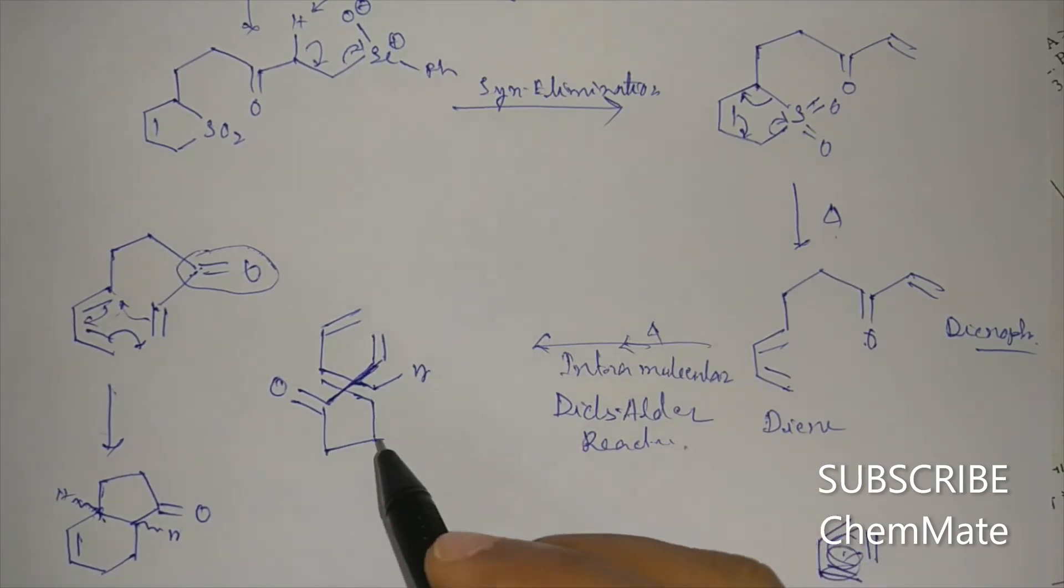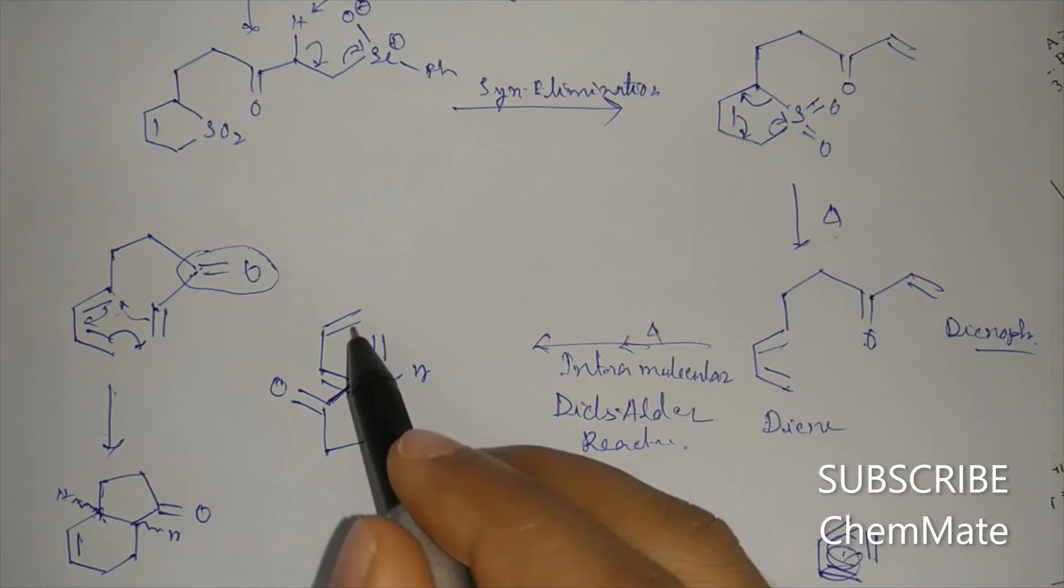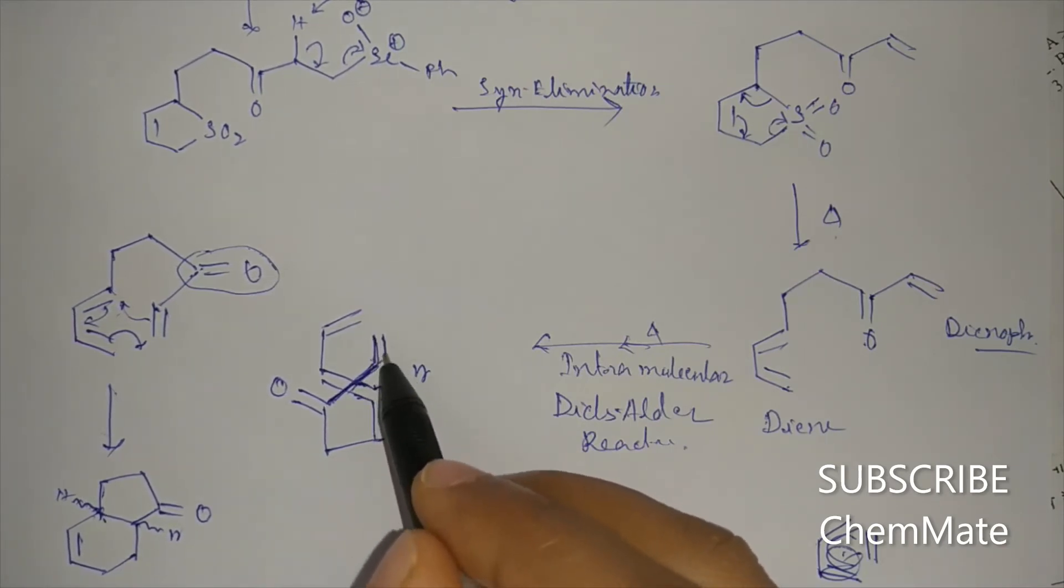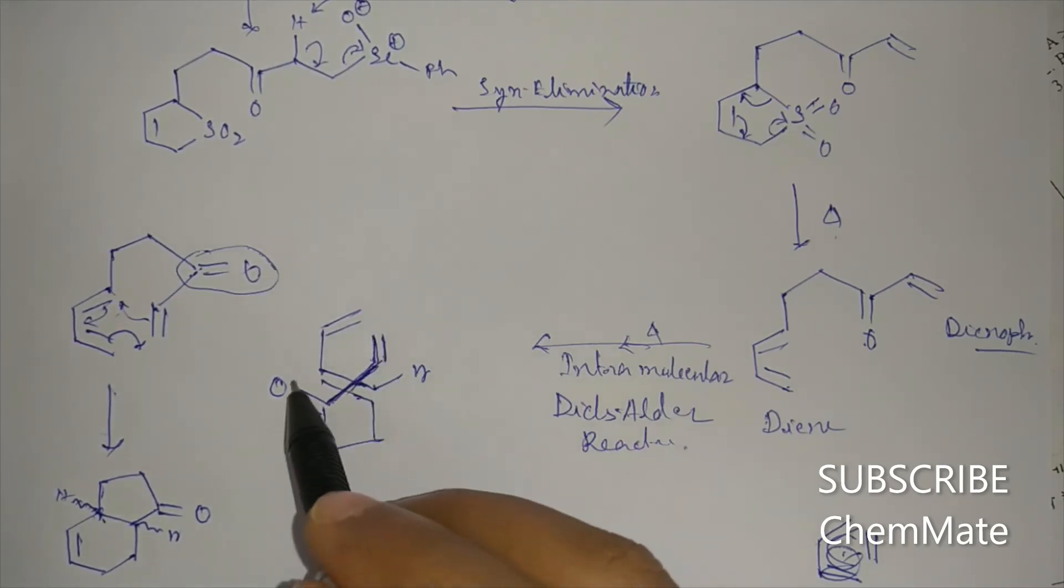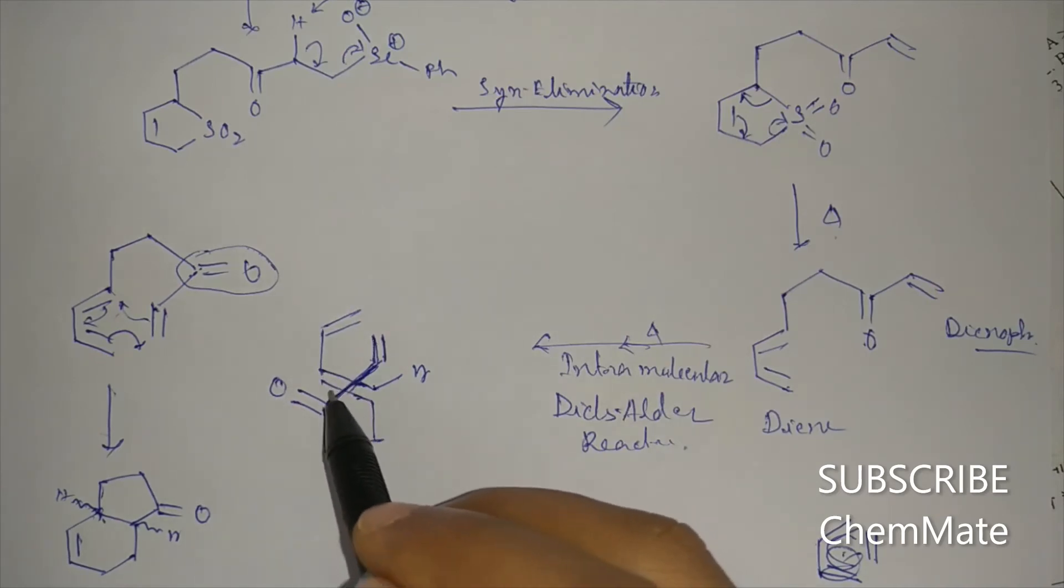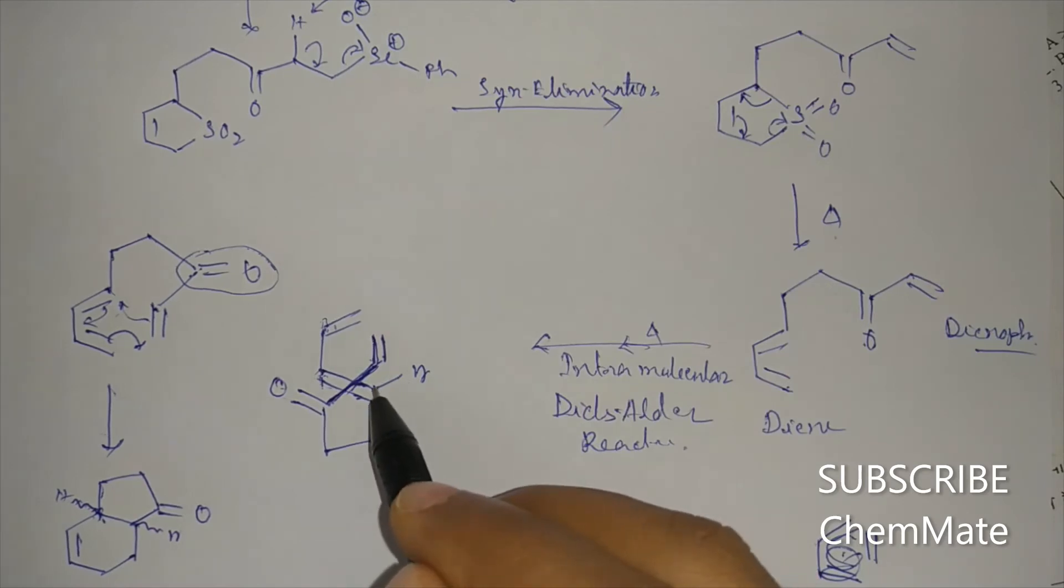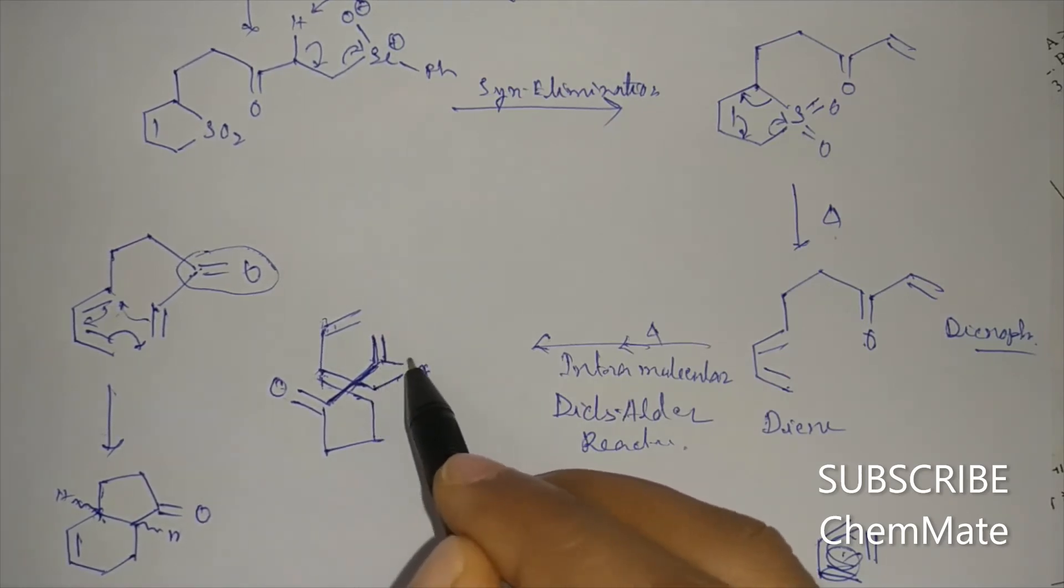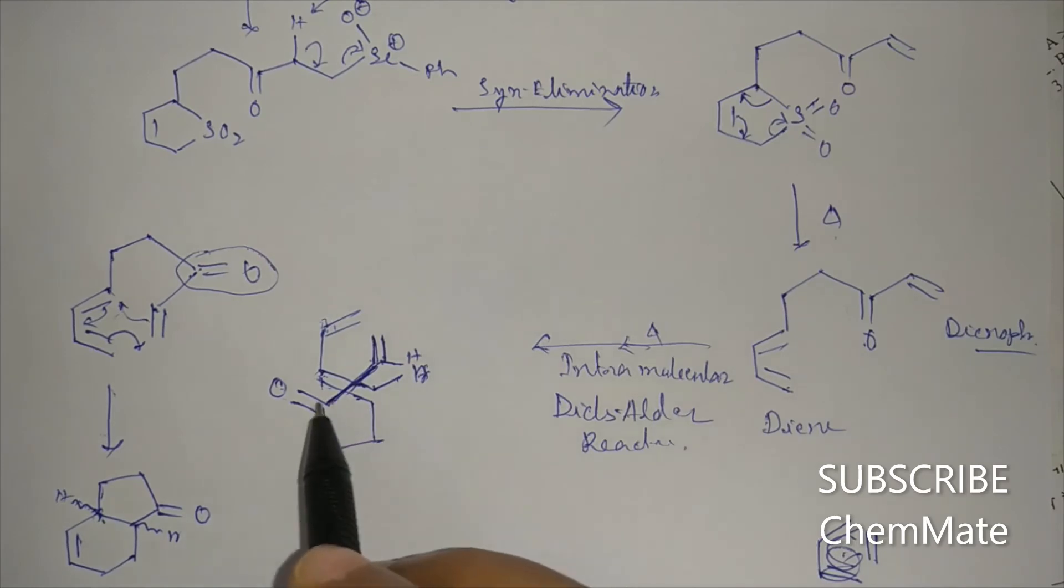Like this, here the dienophile is above the diene, and this orientation is preferred due to the secondary orbital interaction between this C double bond O group and this pi orbital of these two carbons. So here endo orientation will be preferred, and this hydrogen and this hydrogen both will come below the plane.